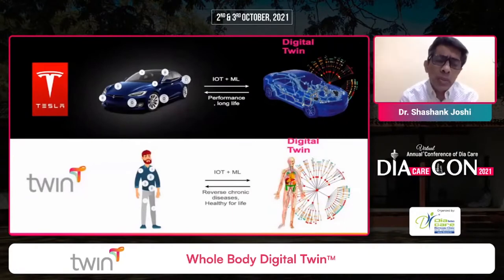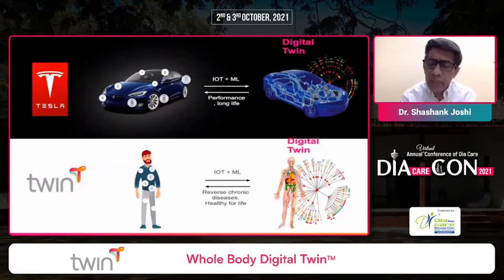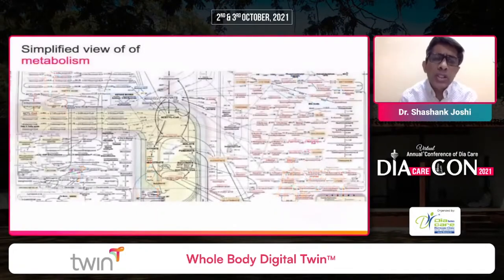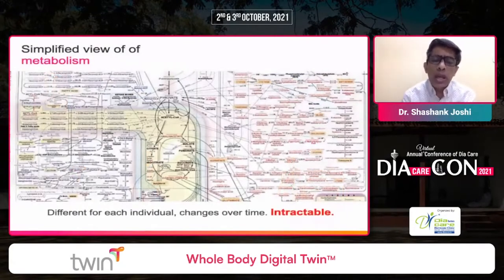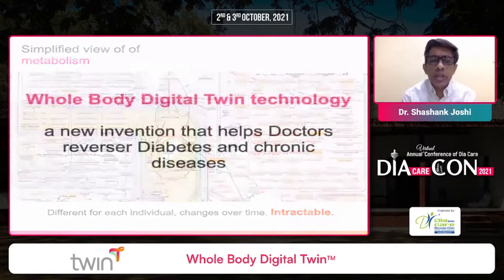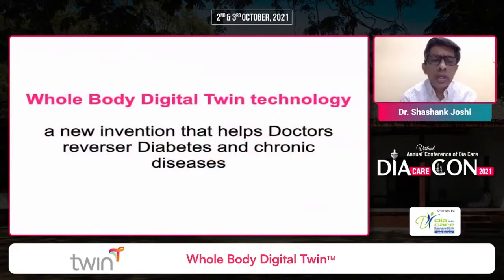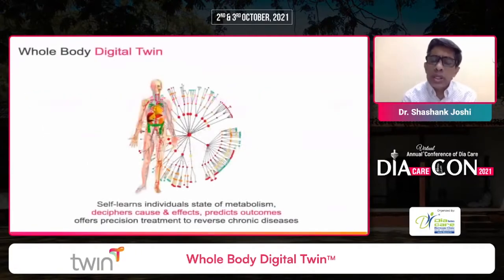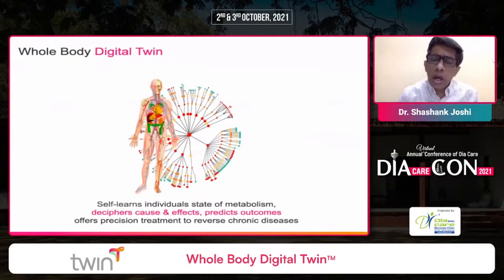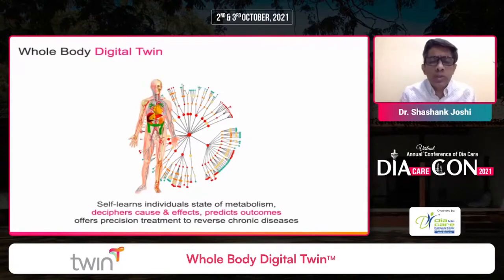Dr. Maluk and his team in the US have developed digital twin technology. It captures many parameters in the body and ensures our body can adapt to a new way of life. The technology gives insight into metabolism in a simplified way. For each individual at different times, there are different metabolic changes. It learns from a human being — it will learn my state of metabolism and try to predict: if I eat idli, how much will my glucose go up? If I have dosa, biryani, rice, or fish, how much will it go up? It self-learns individual metabolism.